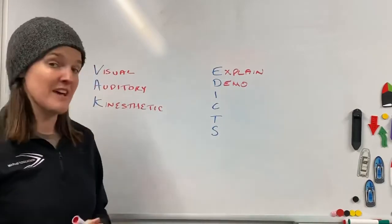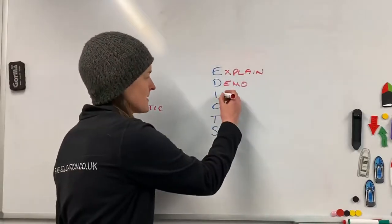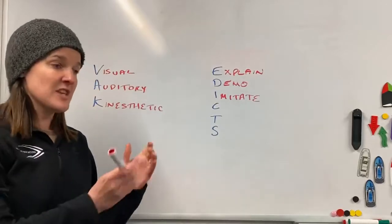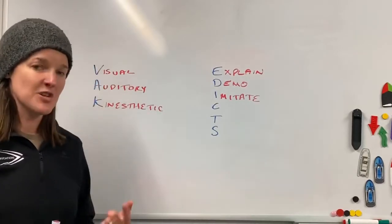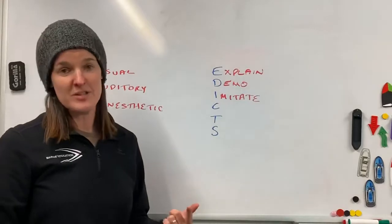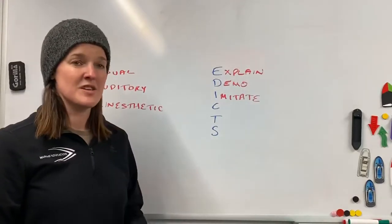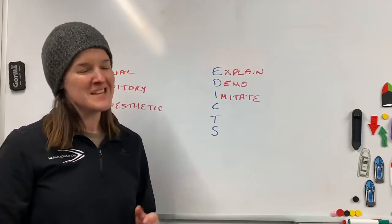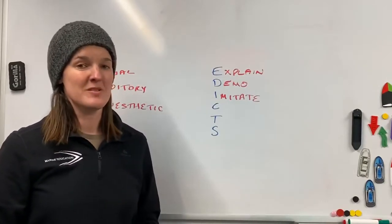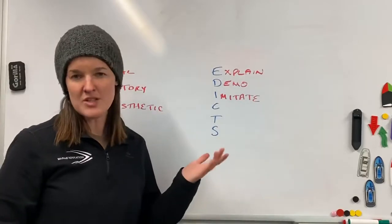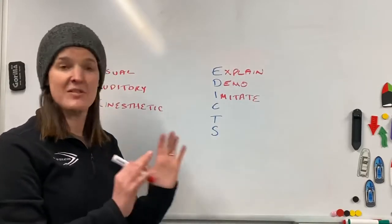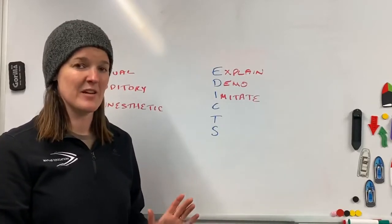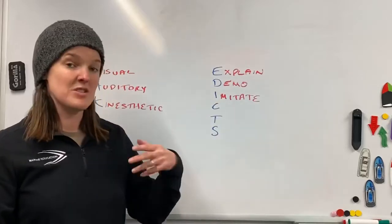The next one is Imitate. After you've explained and shown them what you're expecting, they're going to have a go. Now the chances of them getting that right first time are fairly slim unless they've got other experience on the water. Let them have one, two, maybe three goes. Just leave them be, as long as they're safe, let them just have a crack at it and see how they get on.